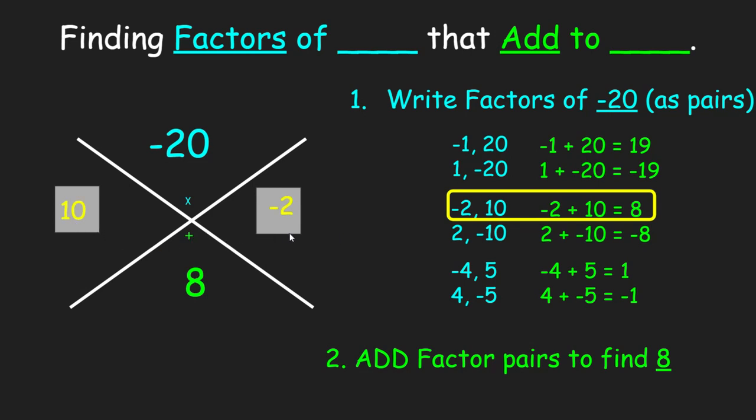As long as the negative sign is correct for the number. If I put in positive 2 and negative 10, I would not be correct because that would give me negative 8. I hope you find this video helpful in playing the X game on Delta Math.